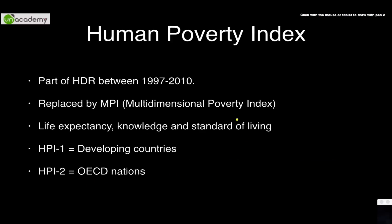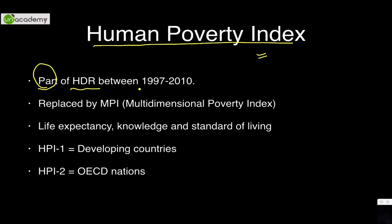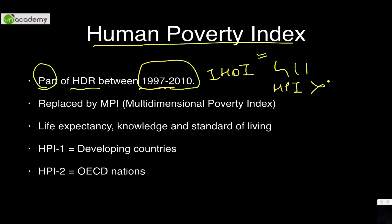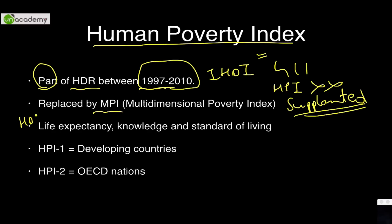The Human Poverty Index is an index that was part of the Human Development Report, published between 1997 and 2010. After 2010, major changes were introduced: the IHDI and GII were introduced, and HPI was completely discontinued. It was supplanted — not supplemented — by MPI. It includes the same dimensions as HDI: life expectancy, knowledge, and standard of living.